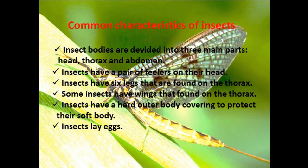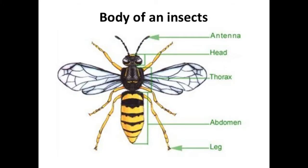Now do you understand the characteristics? Let's look at the body parts of an insect. This is the body of an insect, as teacher mentioned. On the head there is a pair of antennae. This is the head. Then the thorax — the chest part. Remember, the insect body is divided into three parts: head, thorax, and abdomen. This is the thorax, and this is the abdomen. The insect has six legs, or three pairs. Do you understand, children?